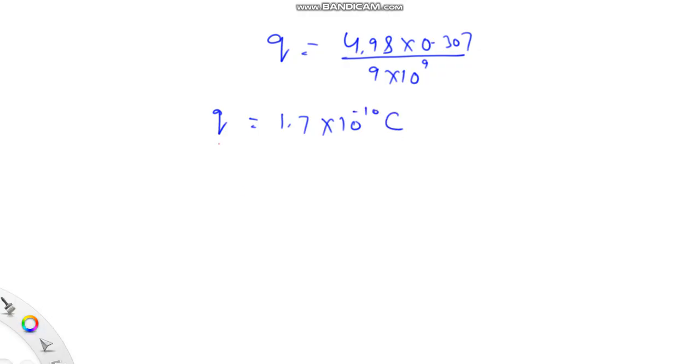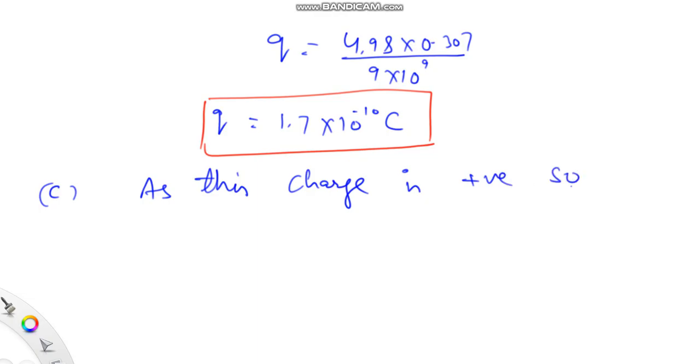Now in the third part of the problem, as this charge comes out to be positive, we conclude that the electric field is going away from the point charge.